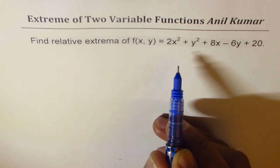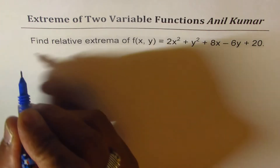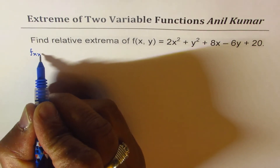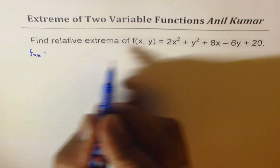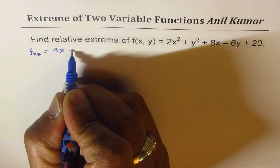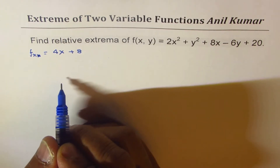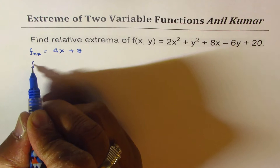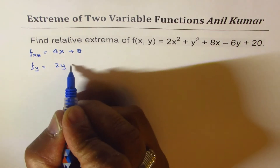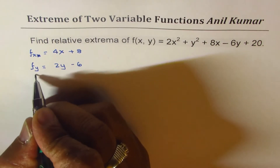To find extreme values, which could be maximum or minimum, we'll find the partial derivatives. For f(x,y), let's find the partial derivative with respect to x first. That gives us 4x + 8. Now let's find the partial derivative with respect to y, which is 2y - 6.